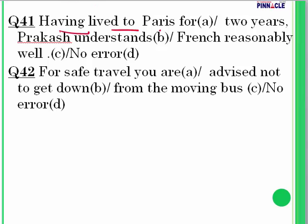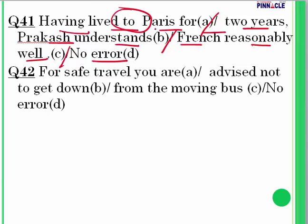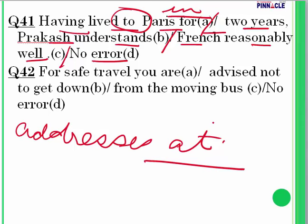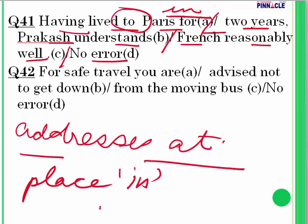Question 41: 'Having lived to Paris for two years, Prakash understands French reasonably well.' The error is 'lived to Paris' — we say 'lived in Paris.' For addresses, the preposition 'at' is used, e.g., 'I live at house number 45.' But for a place, we use 'in.' The error is incorrect use of preposition.